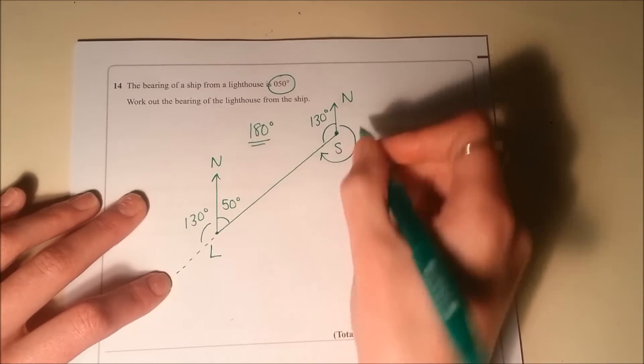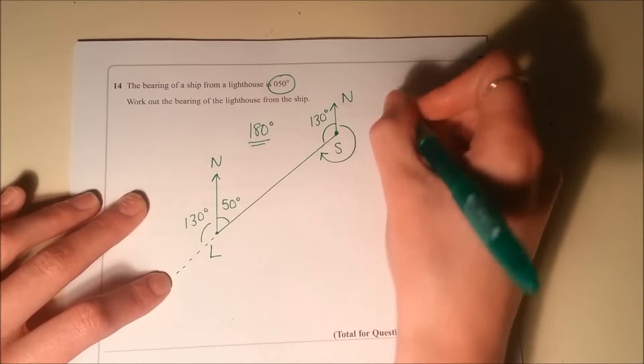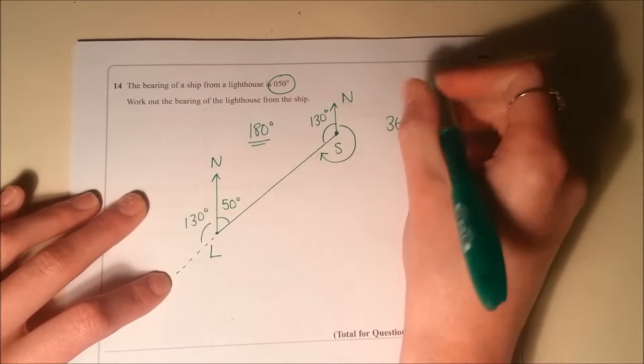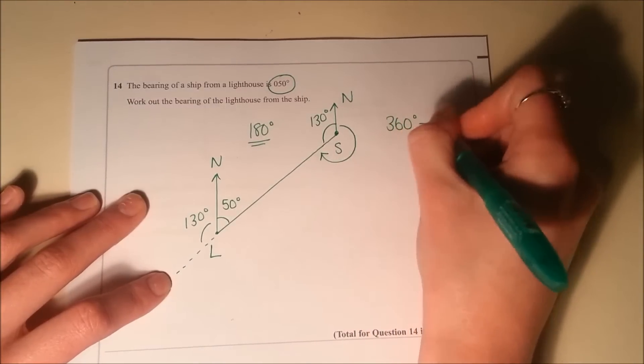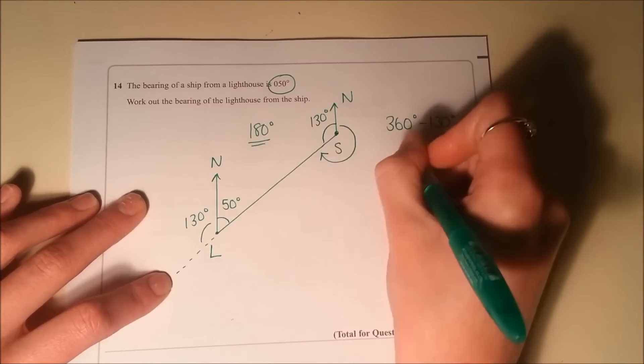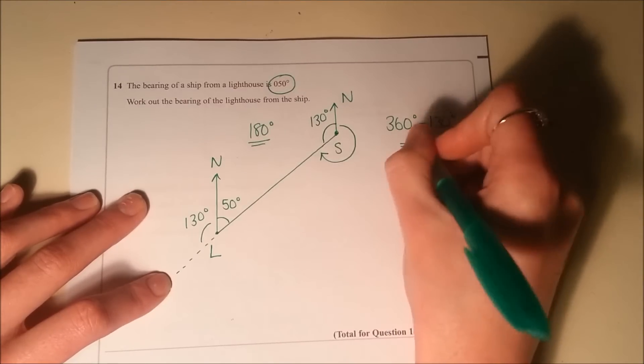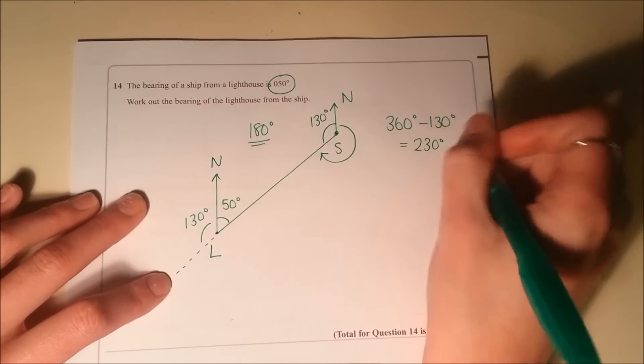Once you've got that, you can actually just say this entire angle around here is 360 because angles around the point are 360, take away 130. So that's going to be 230 degrees.